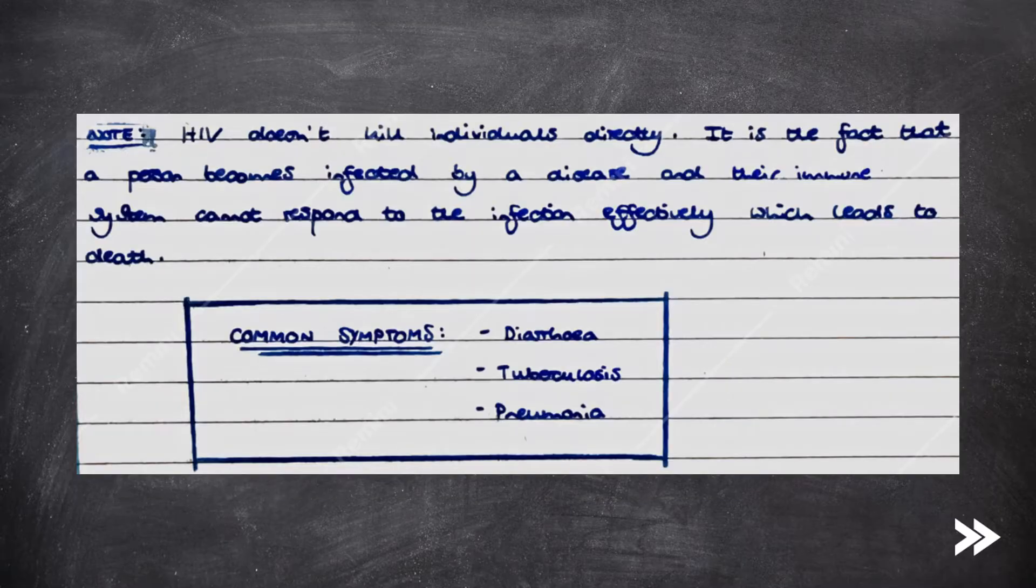Note, however, that HIV doesn't kill individuals directly. It is the fact that a person becomes infected by a certain disease and their immune system cannot respond to this infection effectively, which leads to death. Common symptoms include diarrhea, tuberculosis and pneumonia.